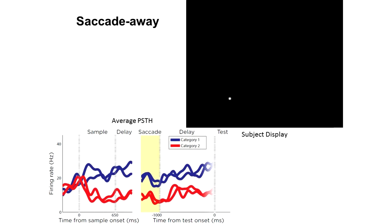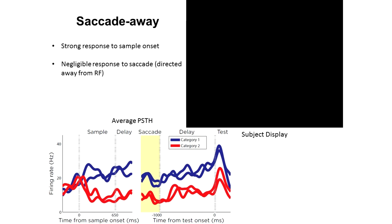During the saccade away condition, the neuron exhibits a minimal response to the saccade, but again, category information is preserved both during the saccade and throughout the remainder of the trial.